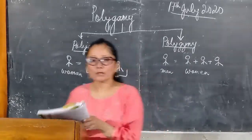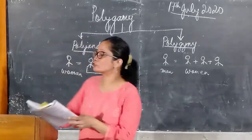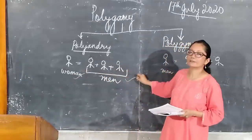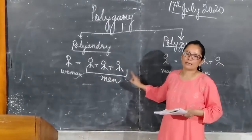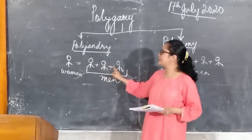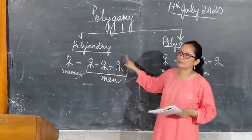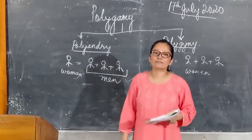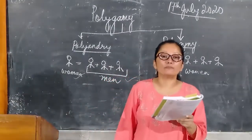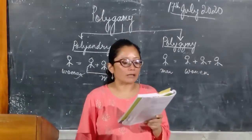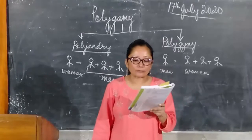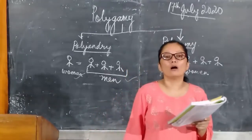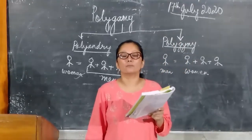Now let us move on to polyandry. Polyandry is just the opposite of polygyny — here one woman gets married to several men. If a woman marries men who are brothers, it is called fraternal polyandry. If these men are not related to one another, it is called non-fraternal or adelphic polyandry. John Lewis has provided a definition: it is a marriage in which a woman can have more than one husband at the same time.